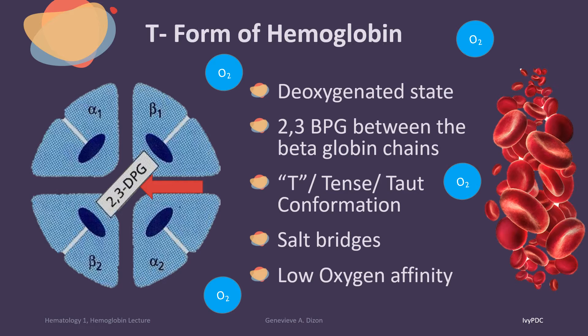When the hemoglobin is in T-form, a 2,3-BPG is bound to both the beta chains of the hemoglobin. In this form, there is low oxygen affinity, or the hemoglobin is resistant to oxygen binding. That is why 2,3-BPG is only found in the deoxygenated state of the hemoglobin.